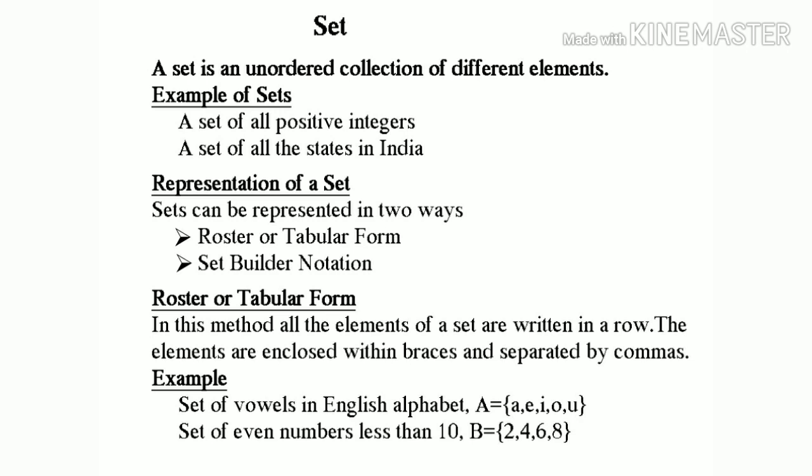Sets can be represented in two ways. They are roster or tabular form, and set builder notation. In the roster or tabular form method, all the elements of a set are written in a row. The elements are enclosed within braces and separated by commas. Example: set of vowels in English alphabet.